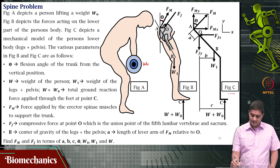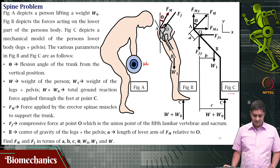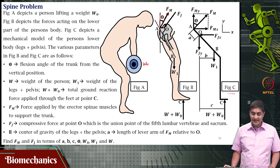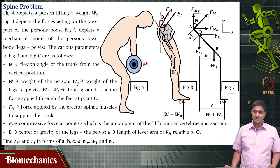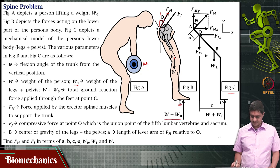Theta is the angle that the muscle force Fm is making with respect to the vertical — that is the flexion angle of the trunk from the vertical position. W is the weight of the person. W1 is the weight of the leg, acting from point B. Assume that only one leg is supporting, because the person's weight is W and the person is carrying an external weight of W naught. The reaction force from the ground on the leg will be W plus W naught, which is the total ground reaction force applied at point C.